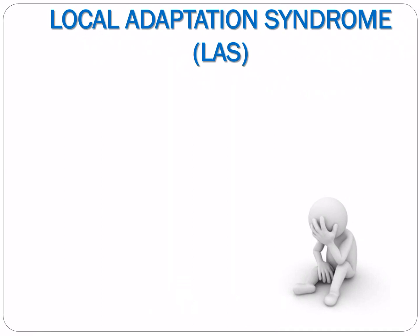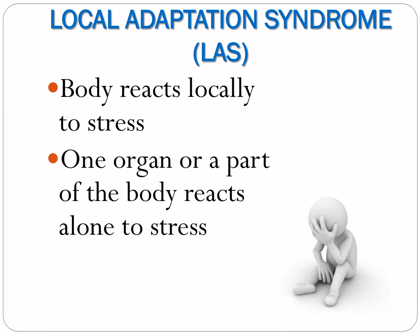For the Local Adaptation Syndrome (LAS), the body reacts locally to stress — one organ or part of the body reacts alone. For example, if you have a cut or injury on your left forearm, the body reacts by creating a localized inflammation; only the left forearm is involved. In GAS the whole body reacts to stress, whereas in LAS only a portion or organ reacts, such as localized inflammation.